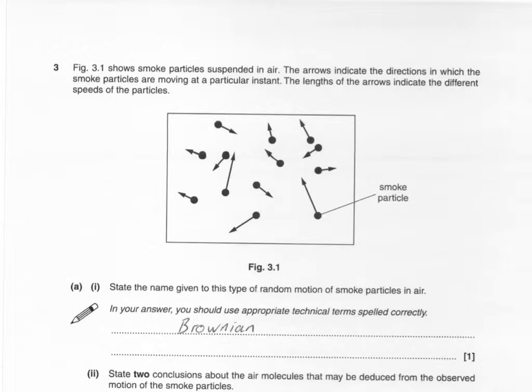So this is G484 Homework Book Club question 3 and it's talking about some smoke particles suspended in air. We can see we've got lots of different velocities represented by those arrows. This type of random motion of smoke particles in air is called Brownian.